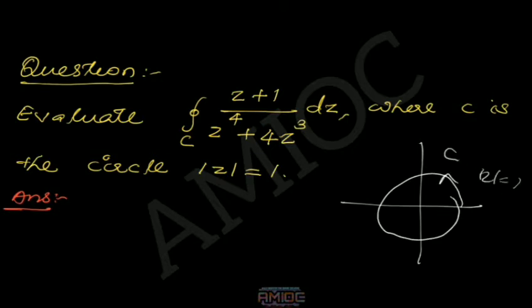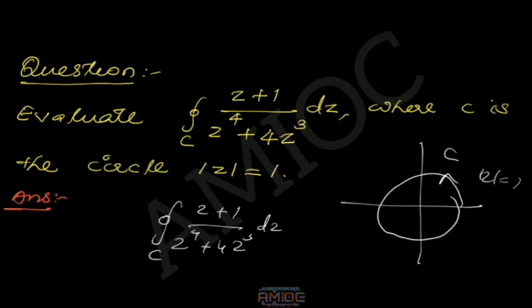We have the contour C given by |z| = 1, and we have to evaluate the integral over this contour of the function (z+1)/(z⁴+4z³) dz.